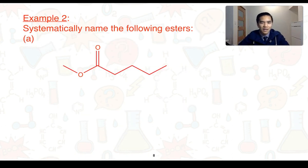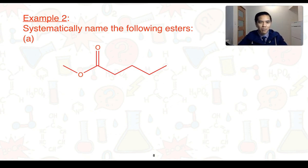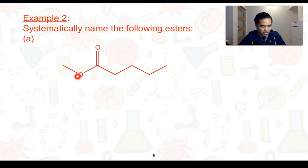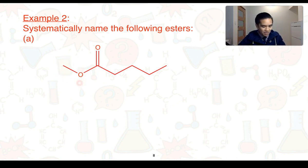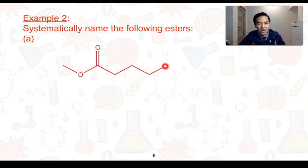Now, on to example two, we're going to look at how to systematically name the following esters given a skeletal formula. The key thing is to identify which part of our ester comes from the alcohol and which part comes from the carboxylic acid. We've got our ester group here. The single-bonded oxygen to this carbon would be derived from our alcohol, whereas the carbon with the oxygen double bond would have come from our carboxylic acid — carboxylic acids already have the C=O double bond. The first part of the name, derived from the alcohol section, resembles a methanol molecule, so it's called methyl. Counting the carbons on the carboxylic acid side: 1, 2, 3, 4, 5 — that makes it a pentanoate. Therefore, the full name becomes methylpentanoate.